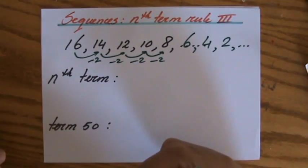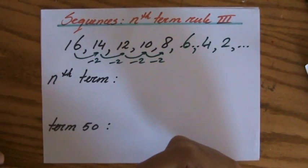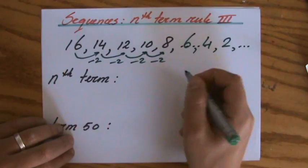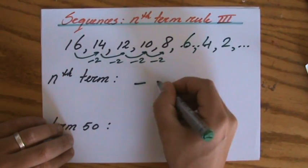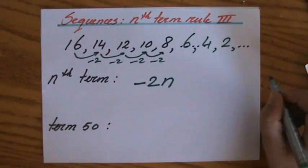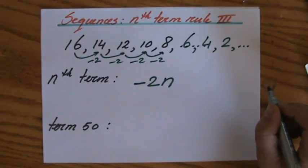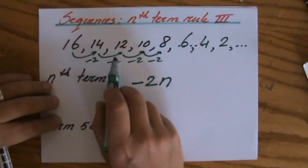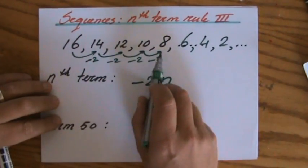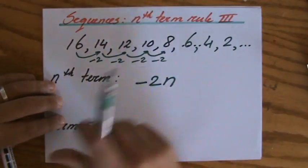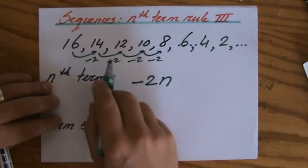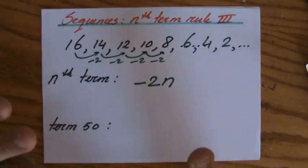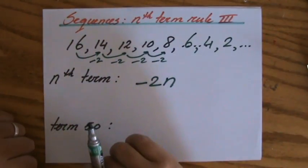So to find the nth term rule, as I explained in my previous videos, you look at the term-to-term rule. It's minus 2, so you write down minus 2n immediately. If it were plus 3, plus 3, plus 3, I would write down 3n. But now it's minus 2, minus 2, minus 2, so minus 2n. I'm not finished yet.